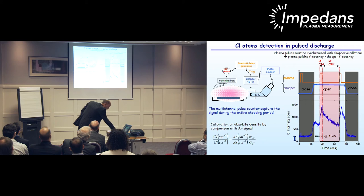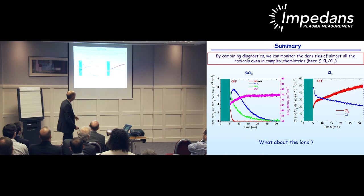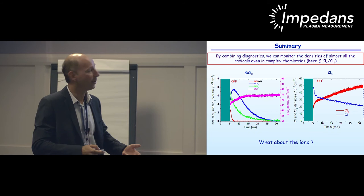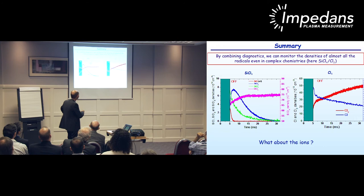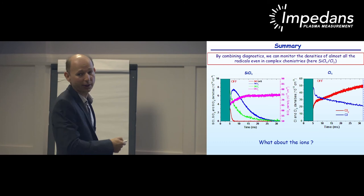I have finished with the diagnostics for neutral species. To summarize: combining absorption spectroscopy and mass spectrometry, we can monitor the density of almost all radicals, even in very complex chemistry. Shown here is a very nice result displaying the time variation during the plasma pulse of SiCl, SiCl2, SiCl3, SiCl4, Cl, and Cl2 densities, which is very interesting for understanding the physics of complex discharges.